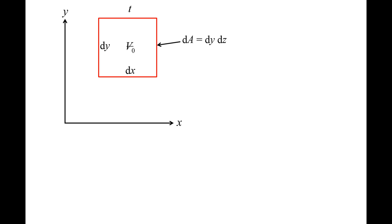The initial volume of the fluid element is V₀, and the area of the right and left sides is dy·dz. The left side of the fluid element is at position x₀, and the right side is at position x₀ + dx. We assume there is a local velocity gradient of the x-component of velocity in the x-direction only, with no other local velocity gradients. On the left side, we label the x-velocity as u(x₀), and on the right side as u(x₀ + dx).